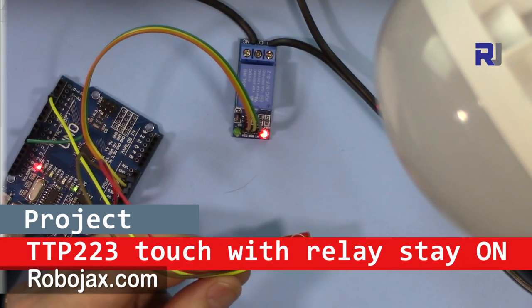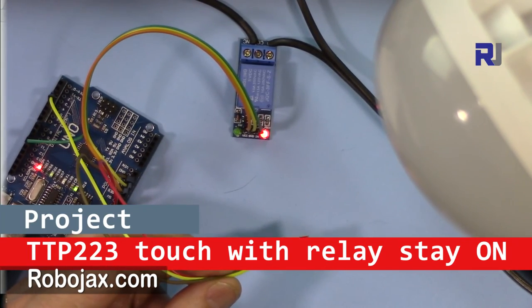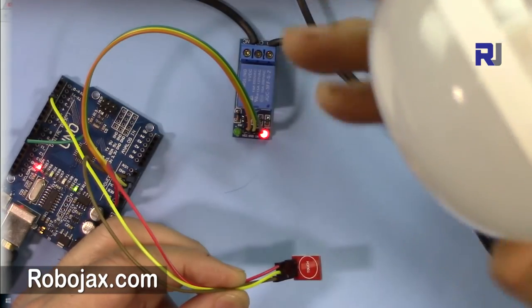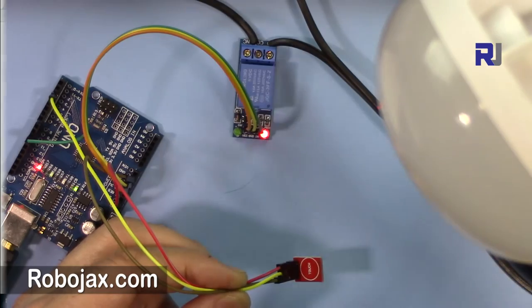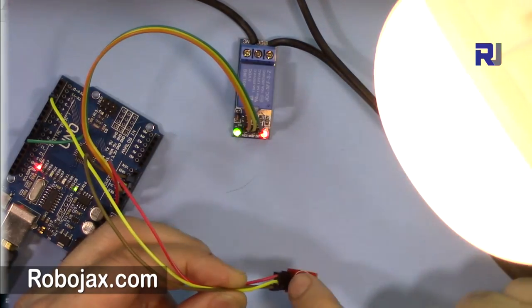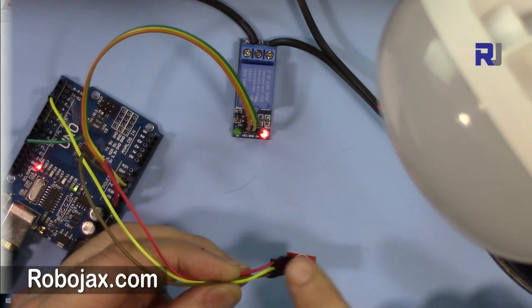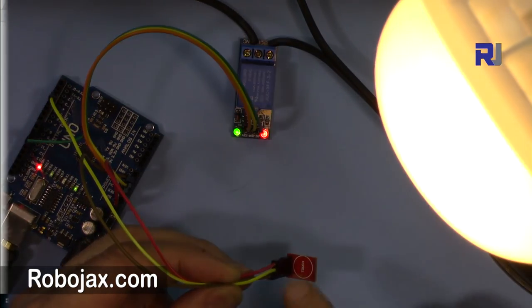Hi, welcome to Robojax. In this video I'm going to show you how you can use the touch relay and Arduino to turn an AC or DC light on when you touch it like this, and then when you touch it again it goes off and stays off.